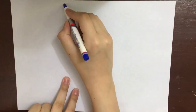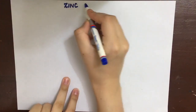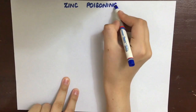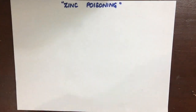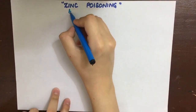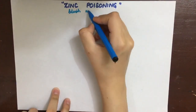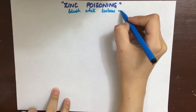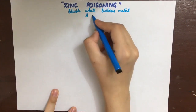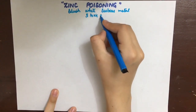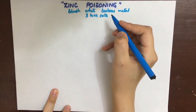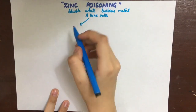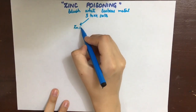The last of the metallic, inorganic, and irritant poisons we have to study is zinc. Zinc is a bluish-white lustrous metal. It has three salts, and all of them are poisonous, but they have different types of poisoning.